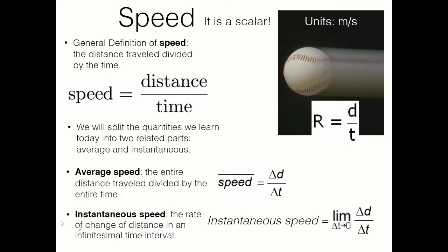You have a lot of experience with instantaneous speed when you look at your speedometer on your car. That is measuring at every instant, based on the mechanics of how it's generated with the transmission, a specific speed — usually in miles per hour, or kilometers per hour in Europe. For our purposes, we're going to look at meters per second.